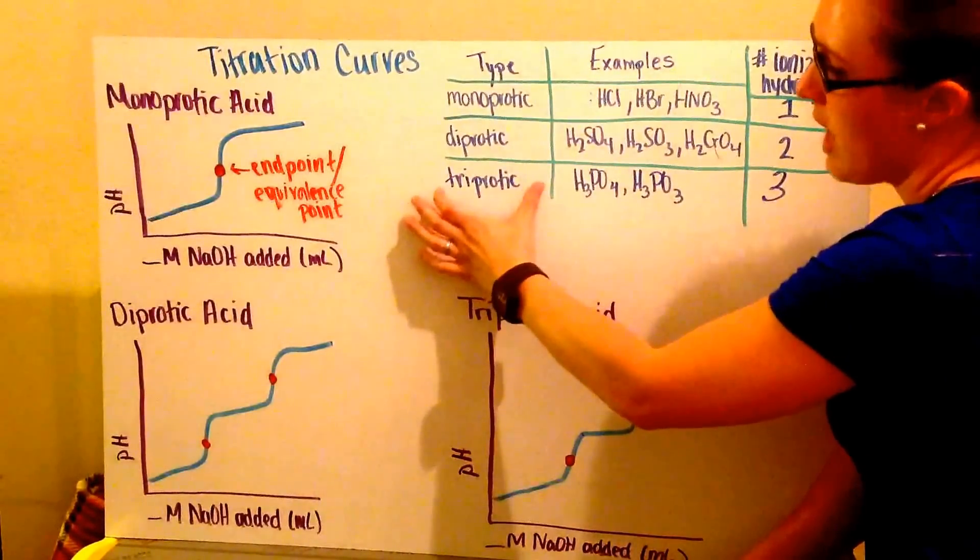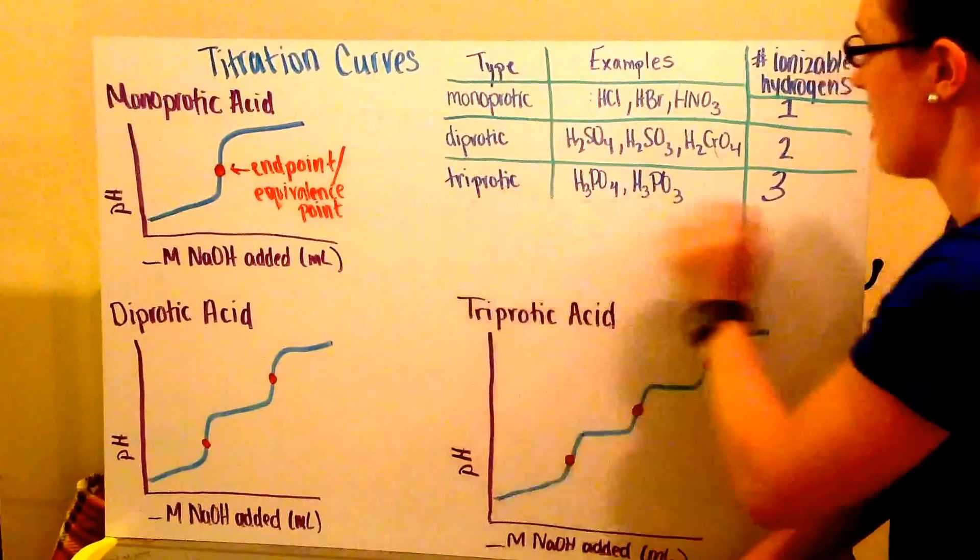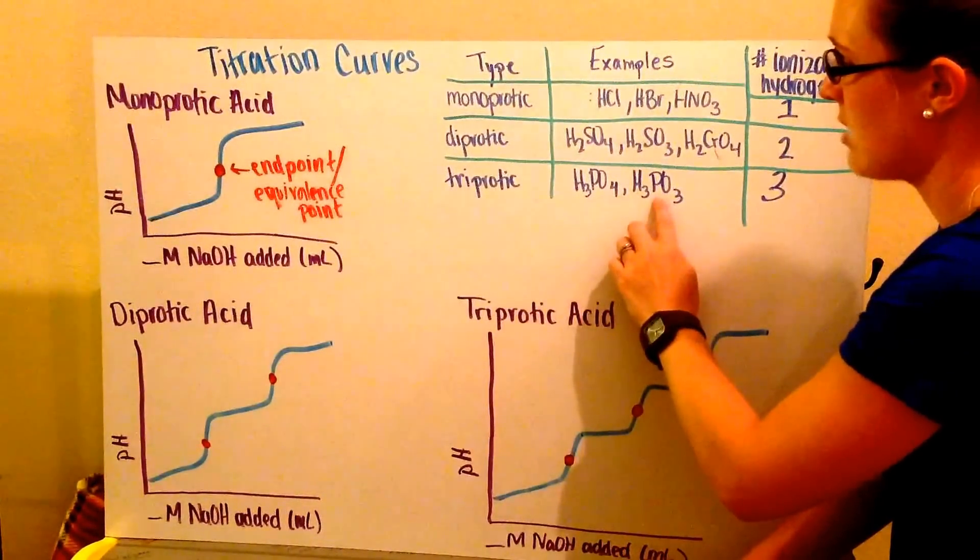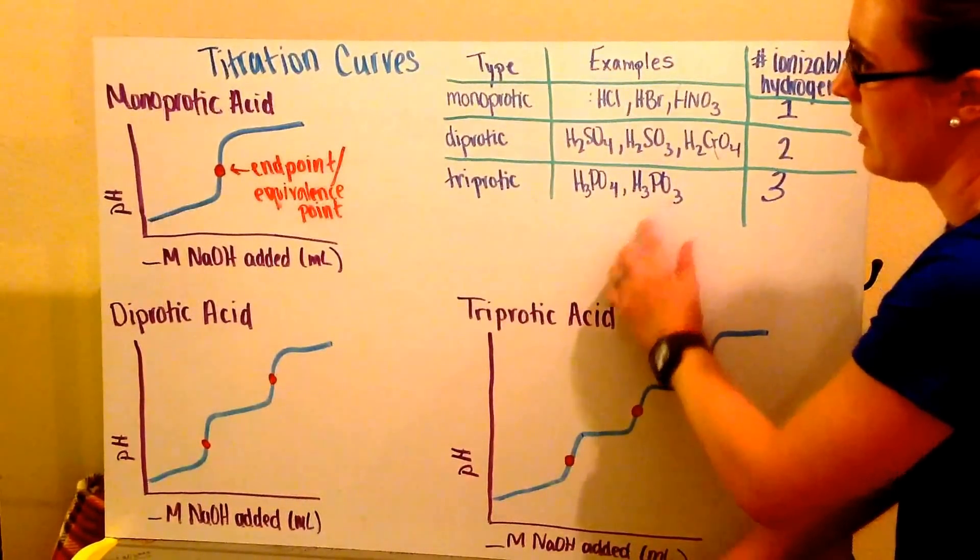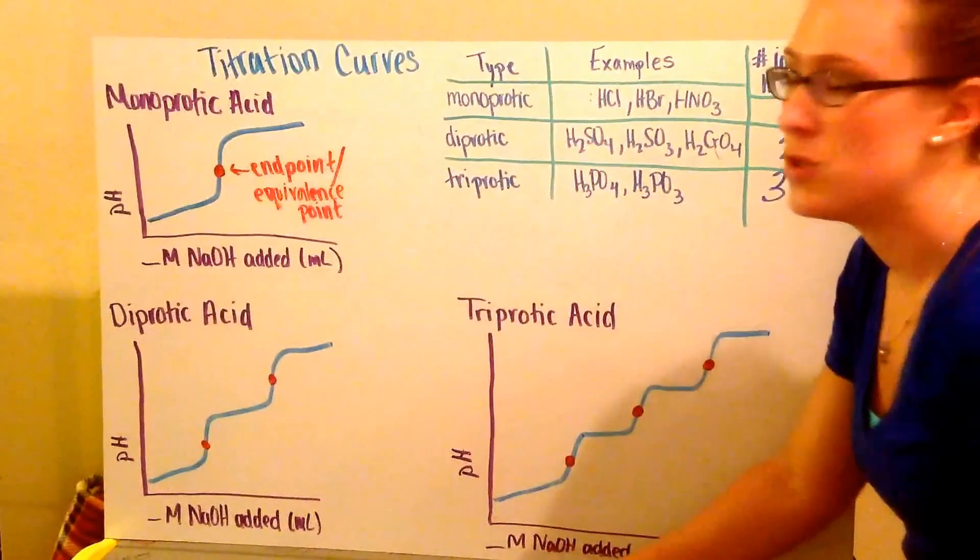I can have a triprotic acid where I have three ionizable hydrogens or three hydrogens attached. I have phosphoric acid and phosphorous acid. Now what these look like when you're actually doing a titration.